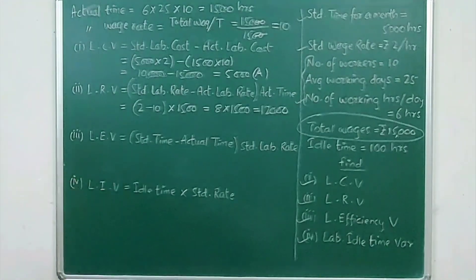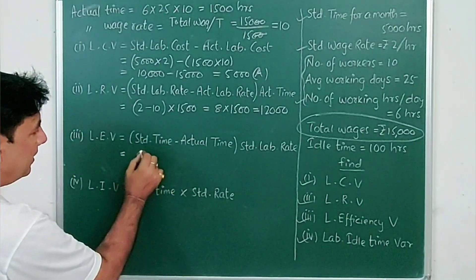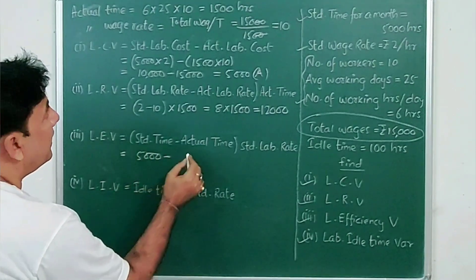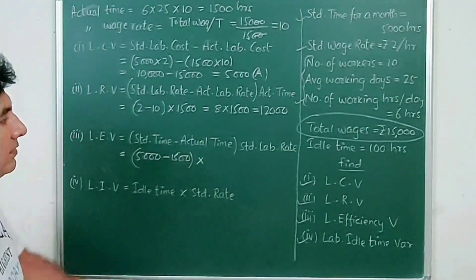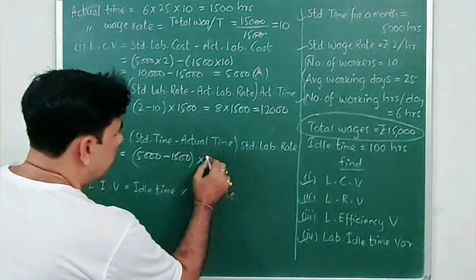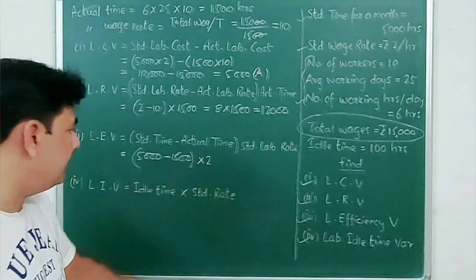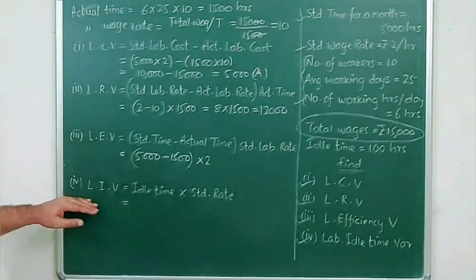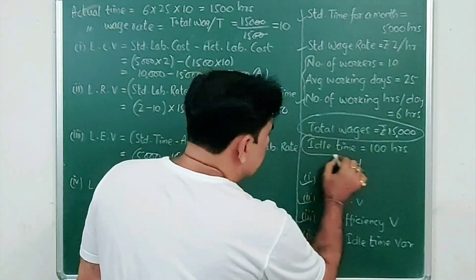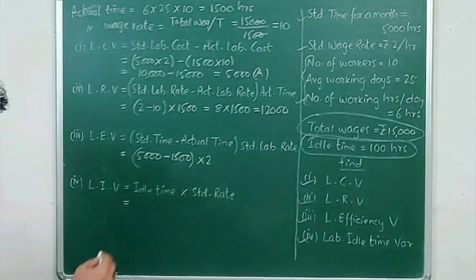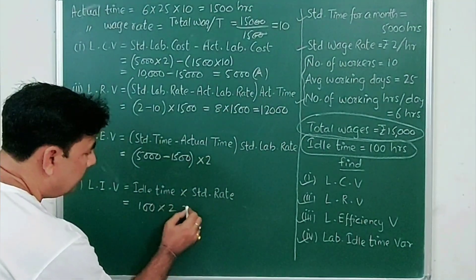For labor efficiency variance: standard time is 5000 hours minus actual time of 1500 hours, multiplied by standard labor rate of ₹2. For labor idle time variance: idle time of 100 hours multiplied by standard rate of ₹2 equals 200.